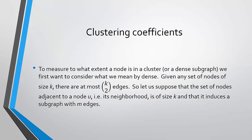What we want to do is measure to what extent a node is in a cluster. Recall that a cluster is a dense subgraph. To clarify what we mean by dense — we mean dense in the sense of how many edges are present. If there are k nodes then k-choose-2 would be the maximum. So how many edges are present over the total number possible gives us a measure of how dense the subgraph is.